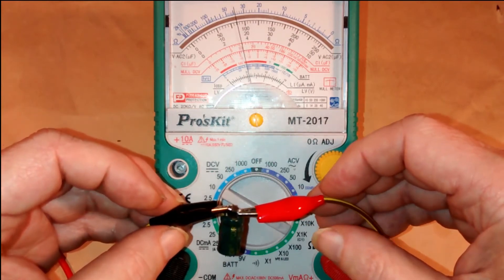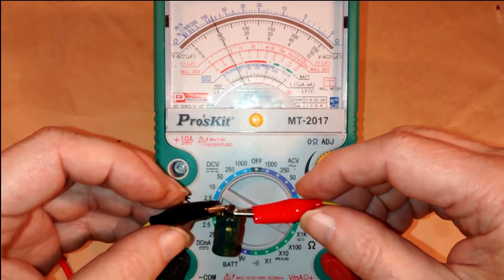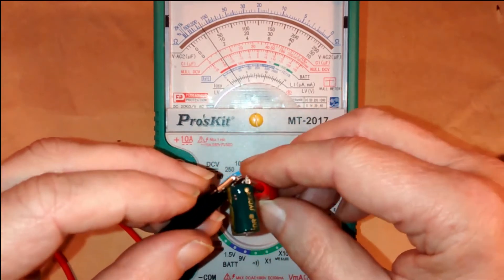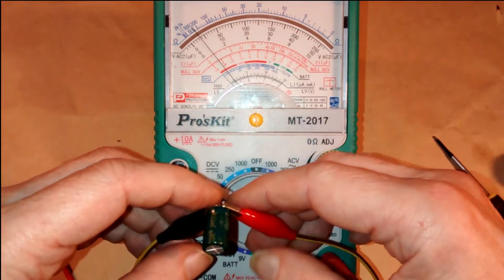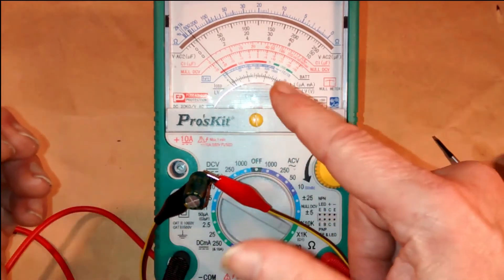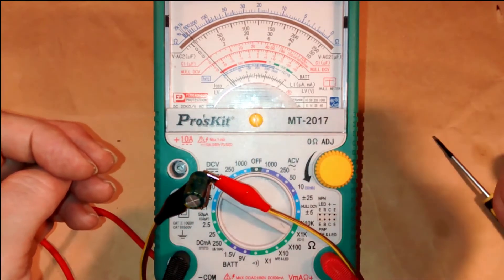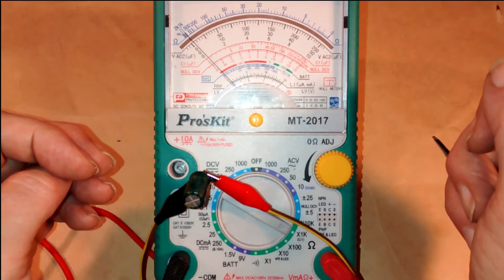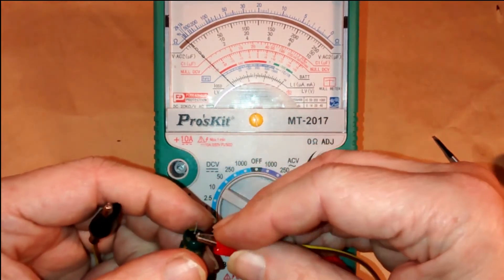Now the higher the value of the capacitor, the slower the needle will move. This one is 35 volt, 470 microfarads. And as you can see as it gets to the end of the scale, it does get slower. And this one will eventually go down to virtually zero, which again is a sign of a good capacitor.